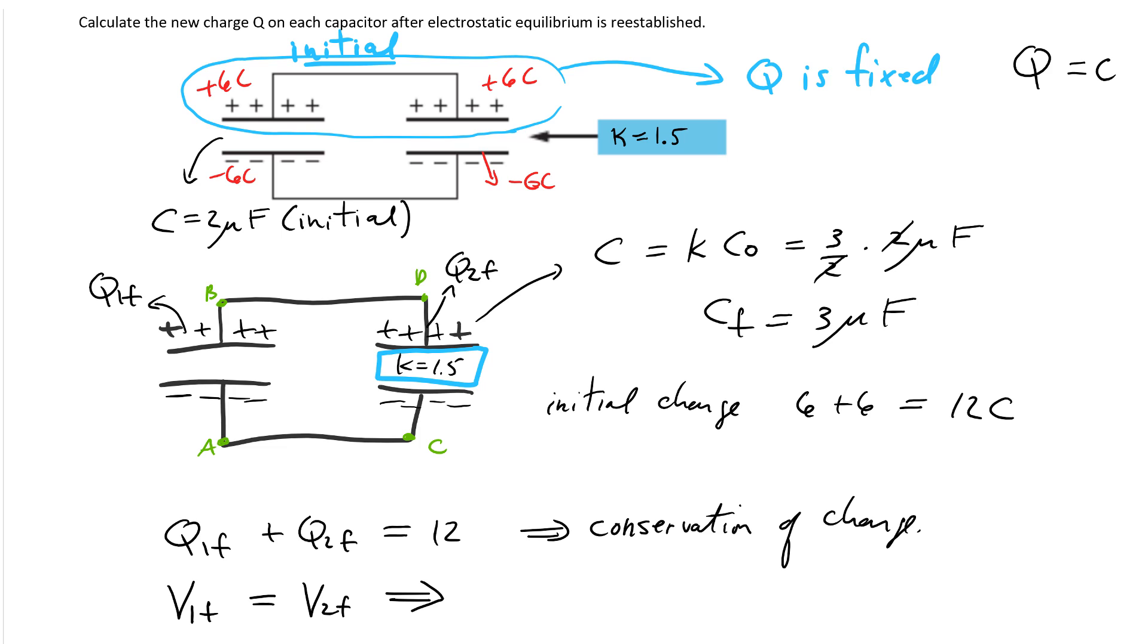That's our main capacitor equation, C = Q/V. So if I substitute it into equation 2, I can simplify this: Q₁ final divided by the capacitance of 1 must equal Q₂ final divided by the capacitance of 2. They're no longer the same, C₁ and C₂, because I've inserted the dielectric on the right-hand side. Therefore I'm going to isolate Q₂ final, which is simply the ratio of the final capacitances multiplied by the charge on the left-hand side, Q₁f.